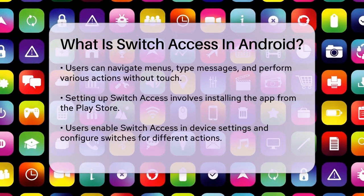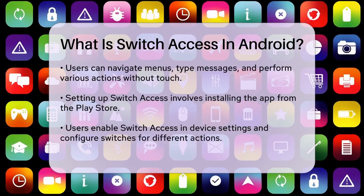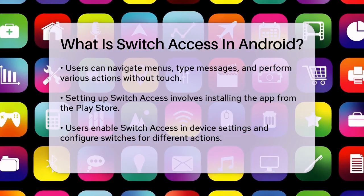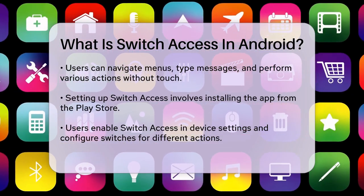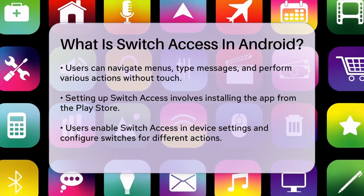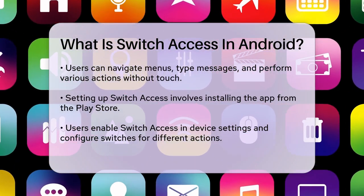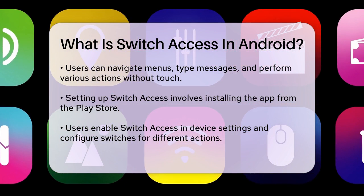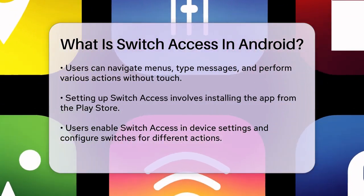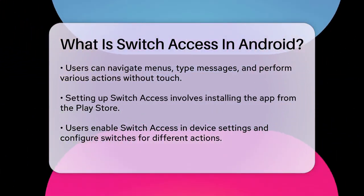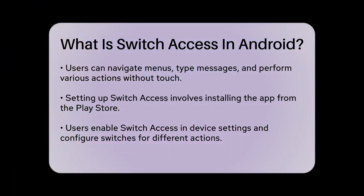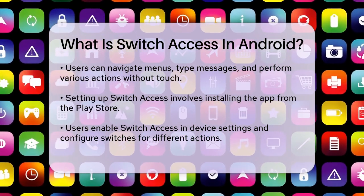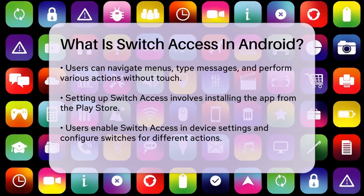Setting up Switch Access is relatively straightforward. First, you need to install the Switch Access app from the Play Store, as it is now a standalone app. Once installed, you enable Switch Access in your device settings. You can then configure your switches to perform various actions.